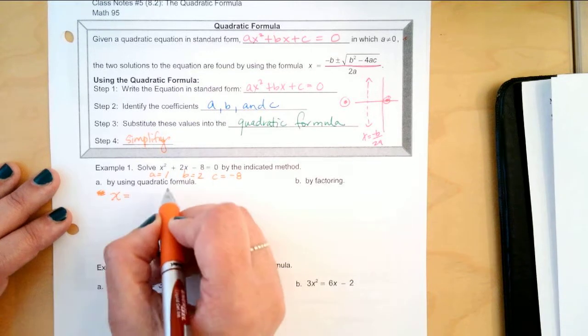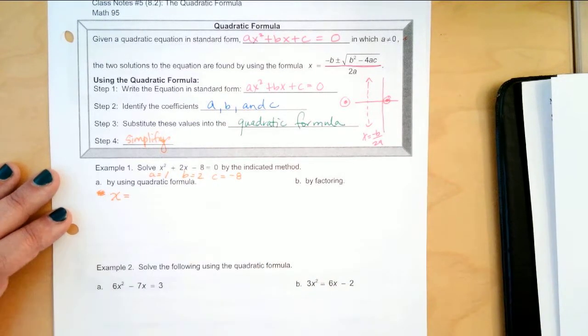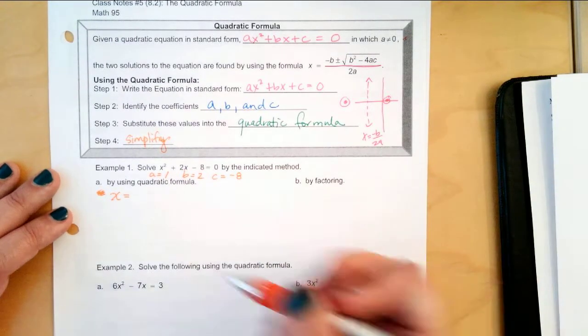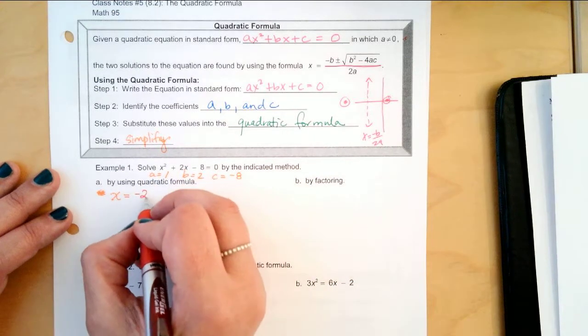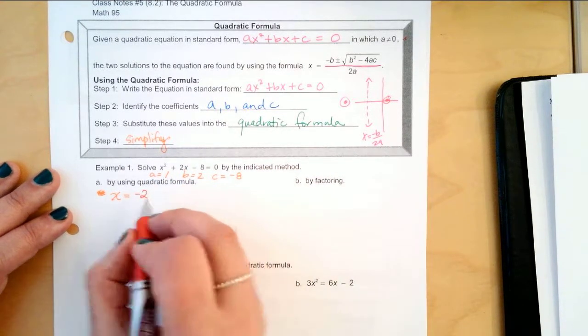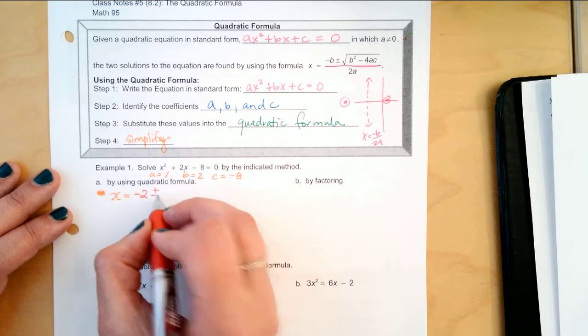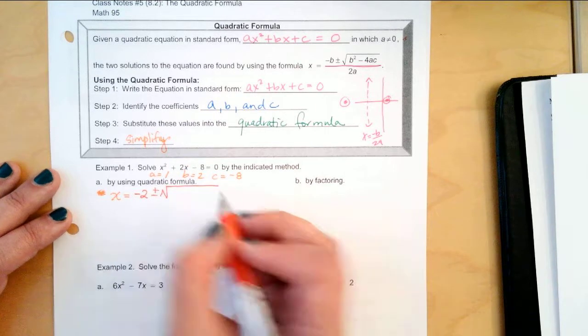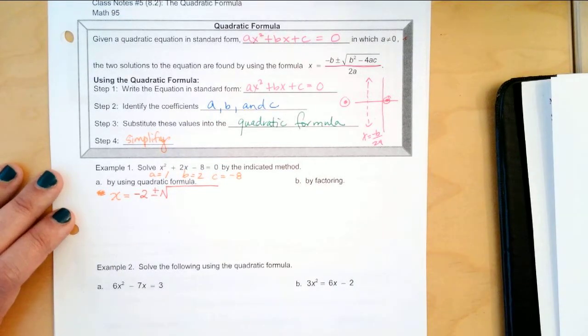So, we have x equals negative b. So, what's that going to be? Negative b is negative 2, because it's already a positive, so we have to make it a negative, plus or minus the square root of b squared. What's b squared?